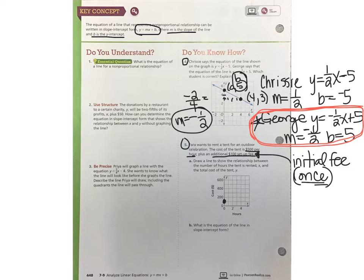Now we can use the $500 per hour to put more points on the grid and connect them. So at one hour's time, we have to pay $100 to set it up plus $500 for the hour. So that means $600 is our total fee after one hour of use. So the line that connects those two points looks like this.